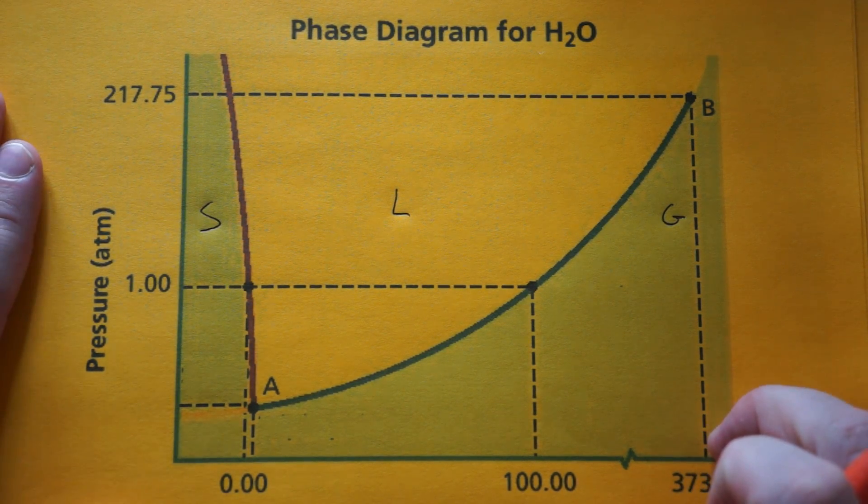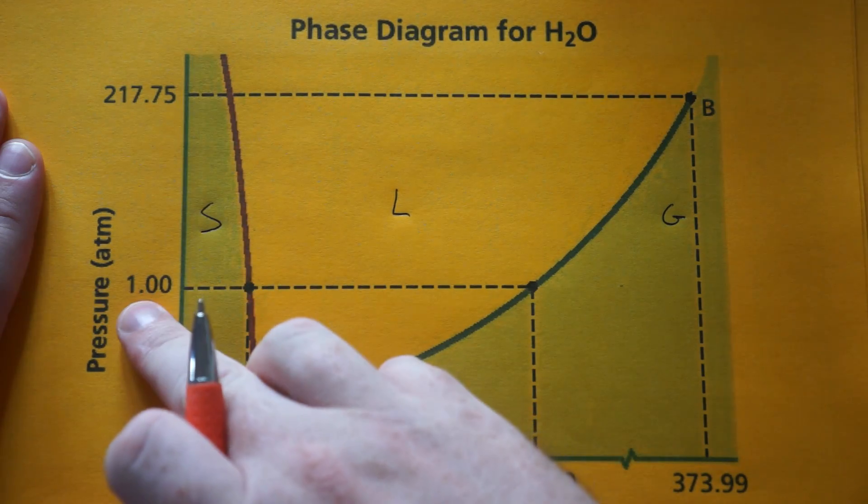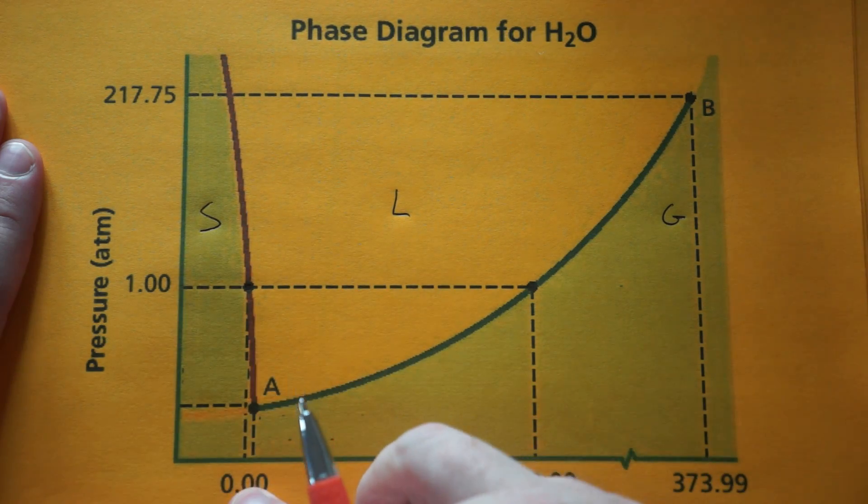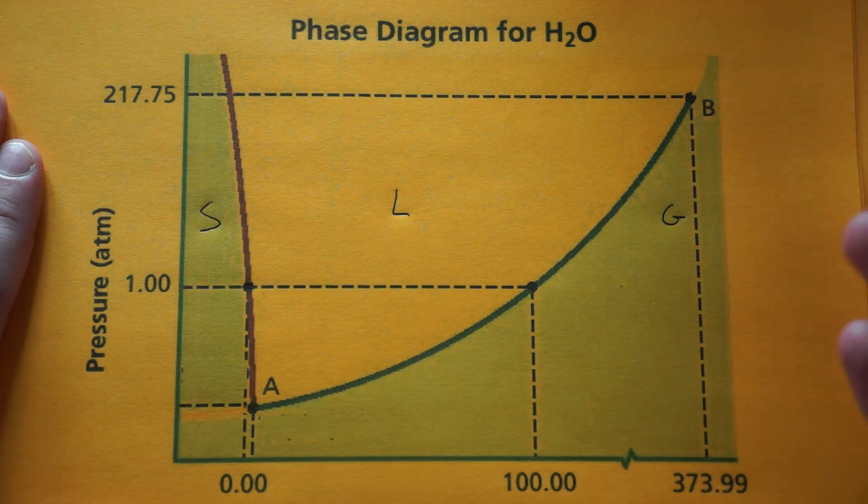You'll be asked questions like normal boiling point and normal melting point. Just know that normal pressure is one atmosphere. Right here is your normal melting point, and right here is your normal boiling point. That's zero degrees and 100 degrees for water.